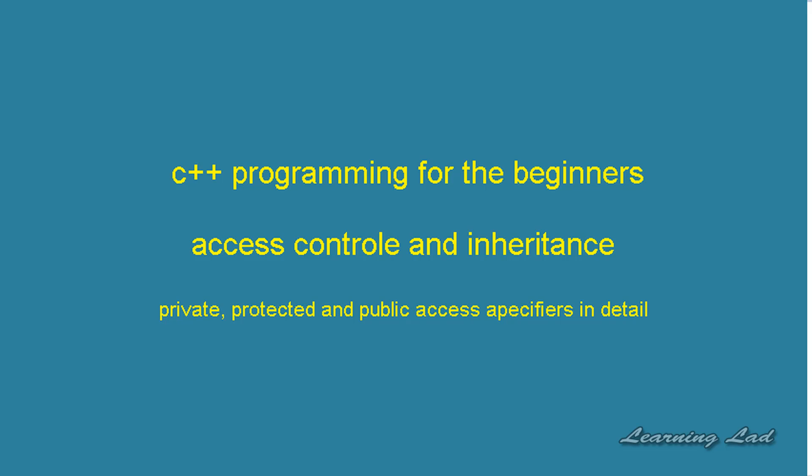If you have any protected members, they are going to be available in the class where they are defined and in the derived classes, but they are not available to any outside functions. If you have any public members, they are available in the derived classes, in the class where they are defined, and also in outside functions.